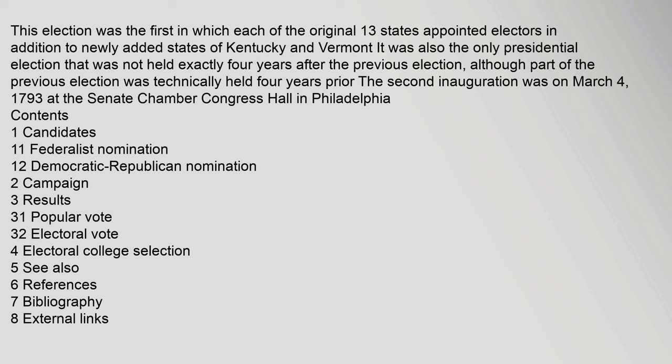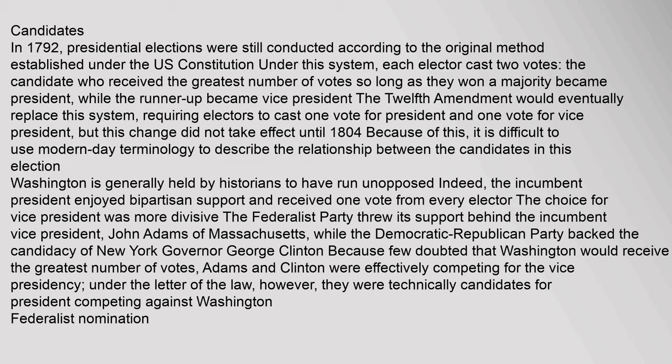In 1792, presidential elections were still conducted according to the original method established under the U.S. Constitution. Under this system, each elector cast two votes; the candidate who received the greatest number of votes, so long as they won a majority, became president, while the runner-up became vice president. The Twelfth Amendment would eventually replace this system, requiring electors to cast one vote for president and one vote for vice president, but this change did not take effect until 1804.